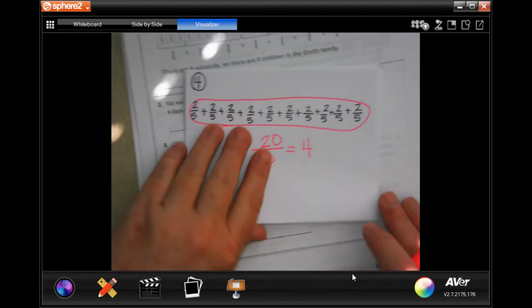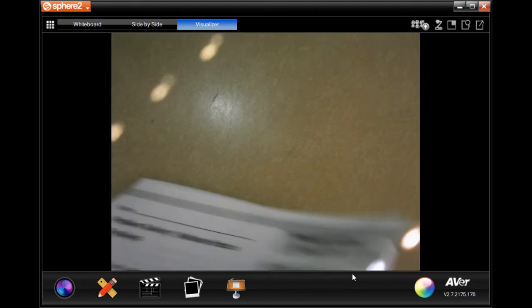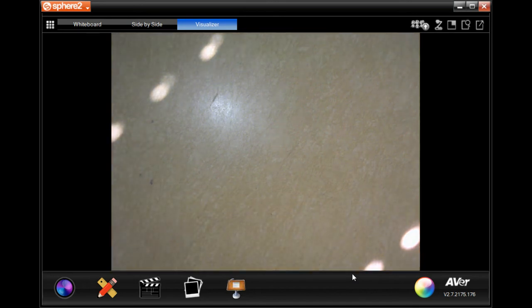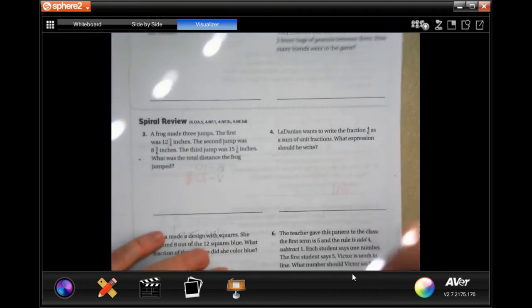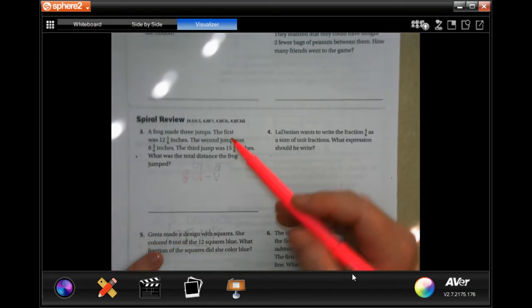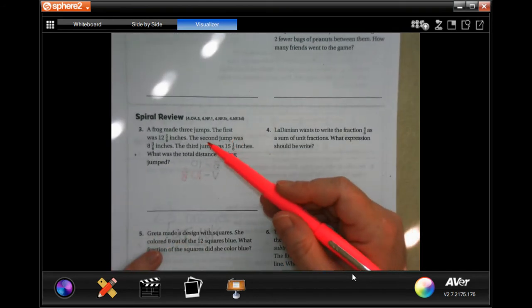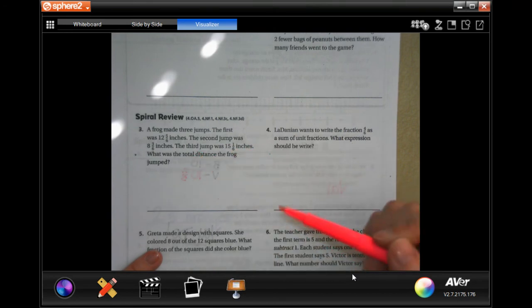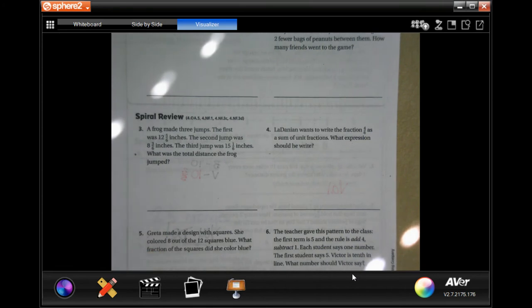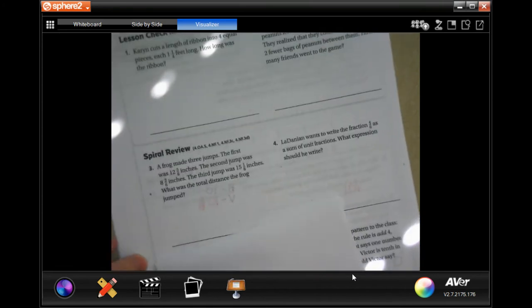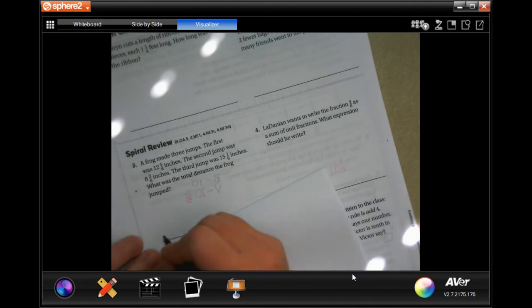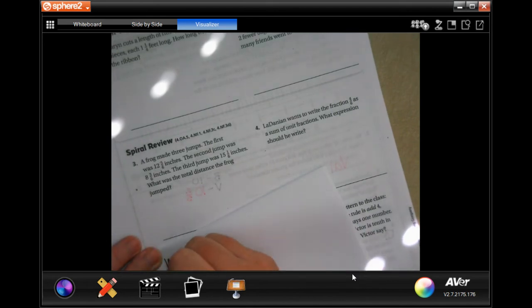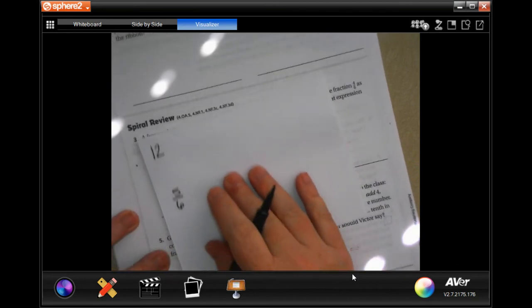We're going to go over to the back where y'all can do the lesson check because you're brilliant and you can. And we're going to do this for our review. A frog made three jumps. The first was 12 and 5/6 inches, the second was 8 and 3/6 inches, and the third was 15 and 1/6 inches. What was the total distance? Well let's add them up.